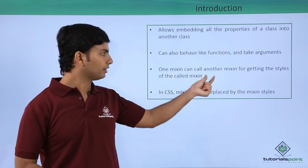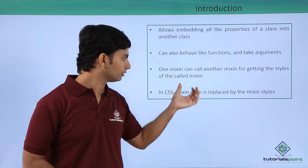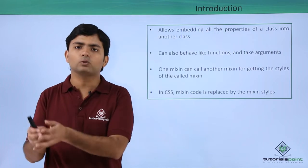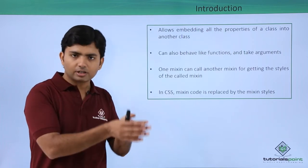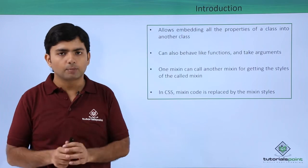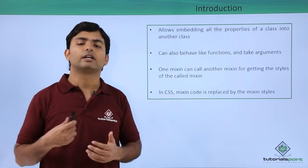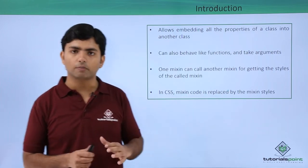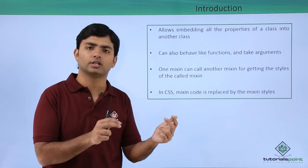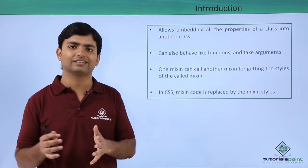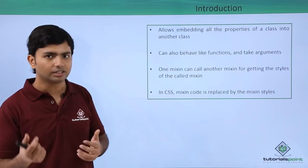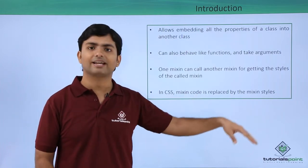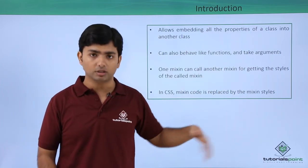One mixin can call another mixin to get its styles. For example, suppose there are two mixins m1 and m2, and m2 is calling m1 — so m1 will give all its styles to m2 as well. That gives reusability in CSS. The mixin code is replaced by mixin styles, meaning if you call a mixin as a function, it will not appear in CSS, but wherever you called it, it will be replaced by the mixin's styles.